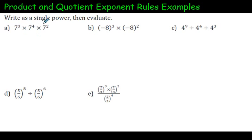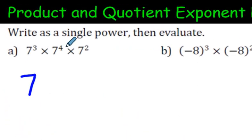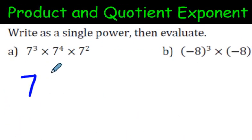When you have this situation here, 7 to the exponent 3, times 7 exponent 4 times 7 squared, all you do is add the exponents. So 3 plus 4 plus 2, that's 7 plus 2 is 9. We are done. We've expressed it as a single power.